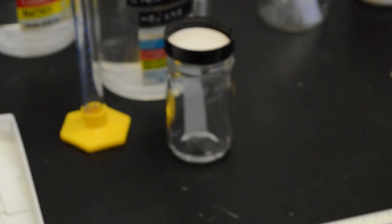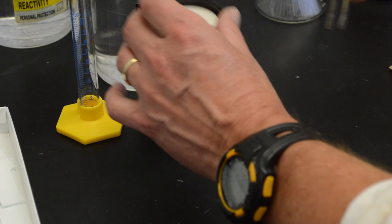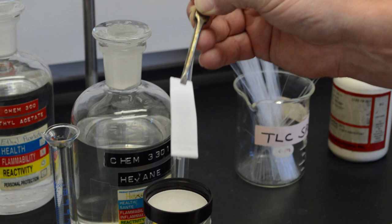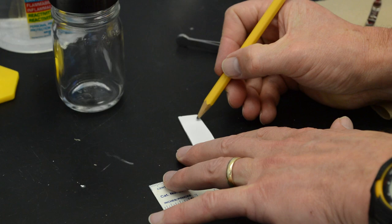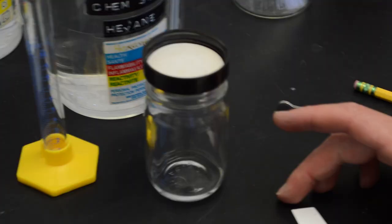And when the solvent has come up within half a centimeter of the top of the plate, you can remove the plate from the chamber and very quickly, with a pencil, just mark a line as to how far the solvent went up. This is called the solvent front. The solvent evaporates from the silica gel on the front, and now we are ready to visualize where our spots are.